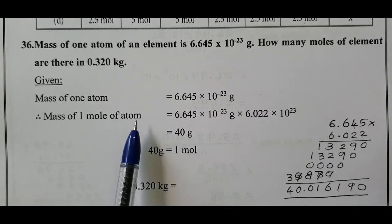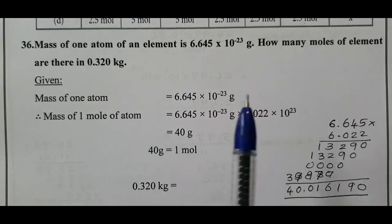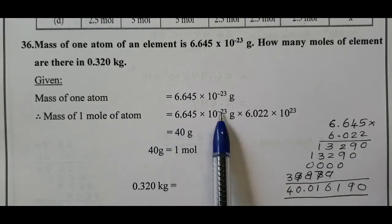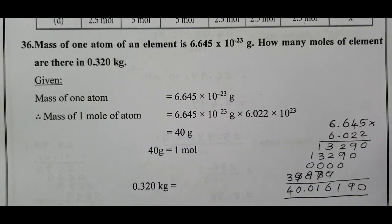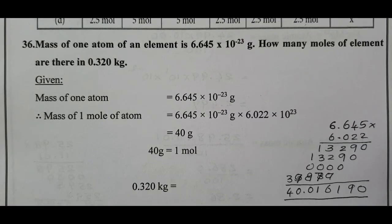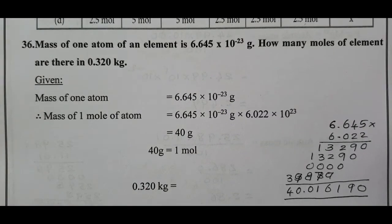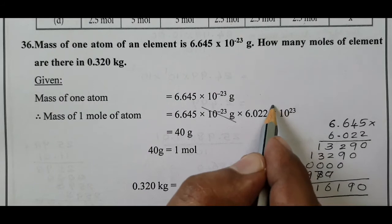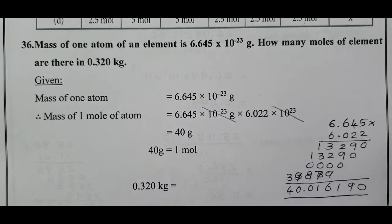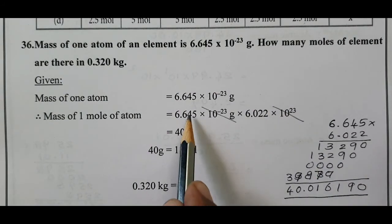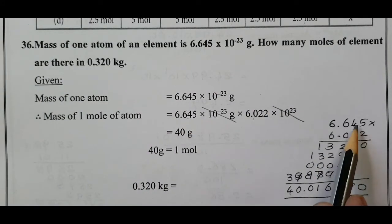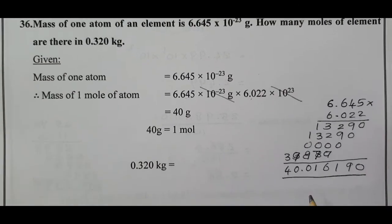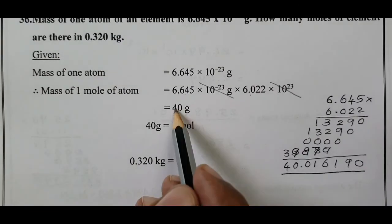Mass of one mole of atoms equals the mass of one atom multiplied by Avogadro's number 6.022 into 10 power 23. The 10 power minus 23 and 10 power plus 23 cancel out. When you multiply 6.645 by 6.022, the answer is approximately 40.01, taken as 40 gram.